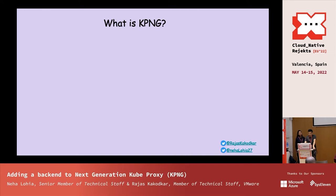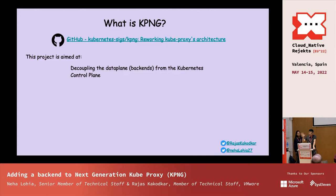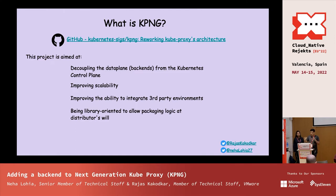What is kubeproxy next-gen? This is a working group on the special interest group network — SIG network — in the Kubernetes ecosystem. We're basically trying to redesign the architecture of kubeproxy, aimed at decoupling the data plane from the Kubernetes control plane, improving scalability, improving the ability to integrate third-party environments, and being library-oriented to allow packaging logic at distributors as well.